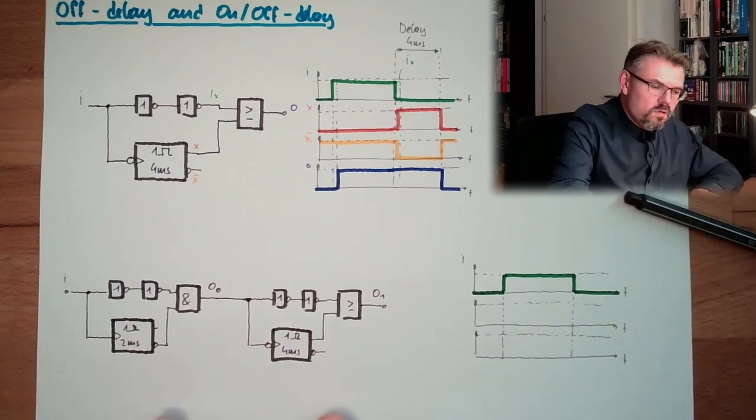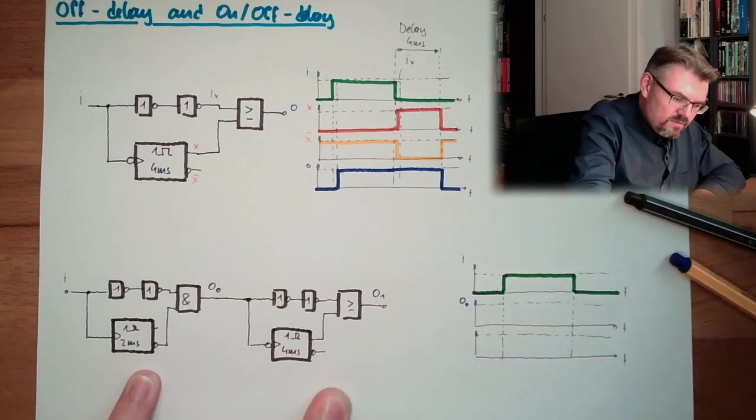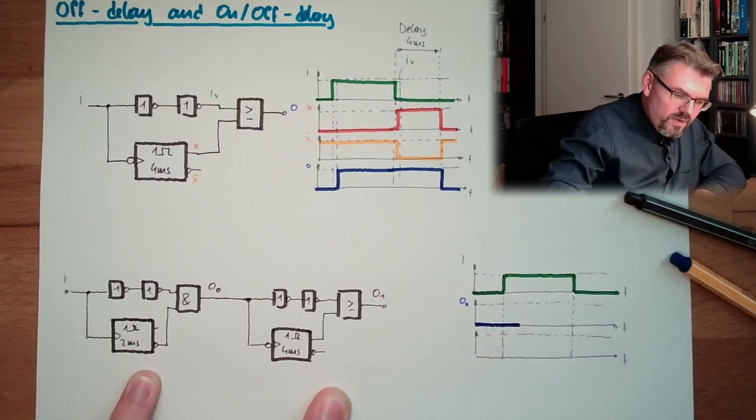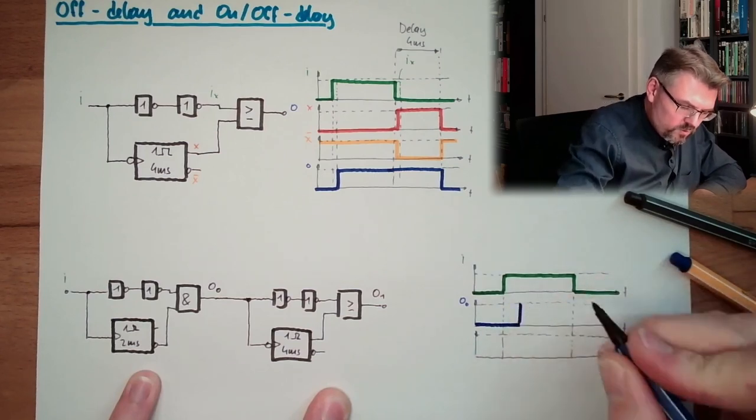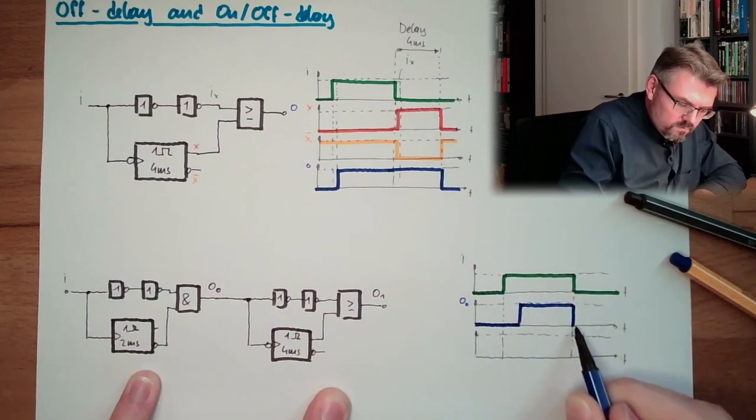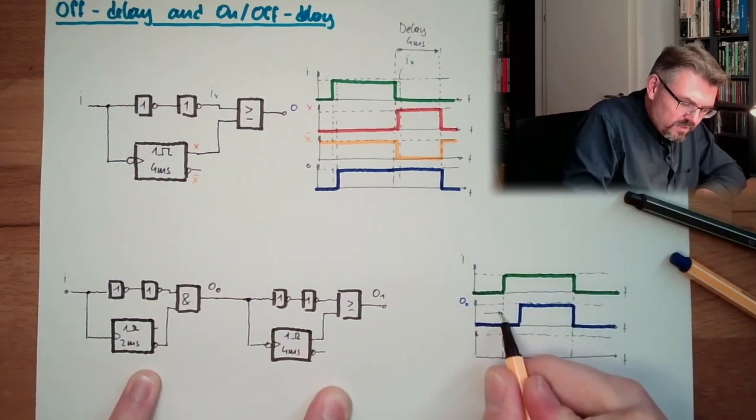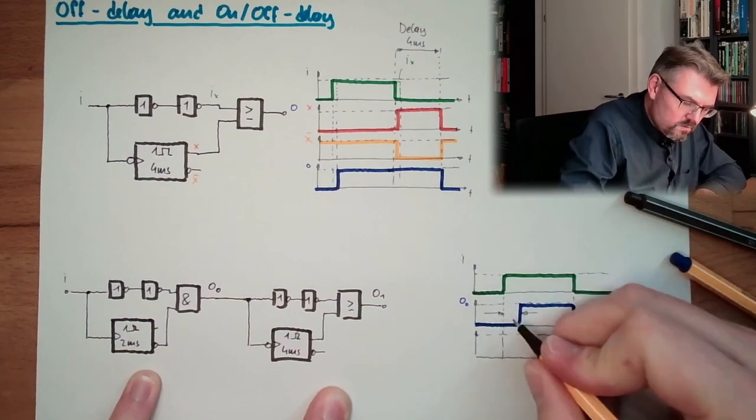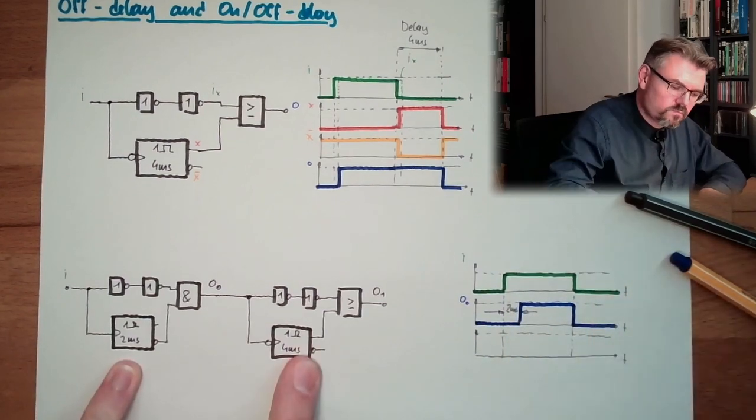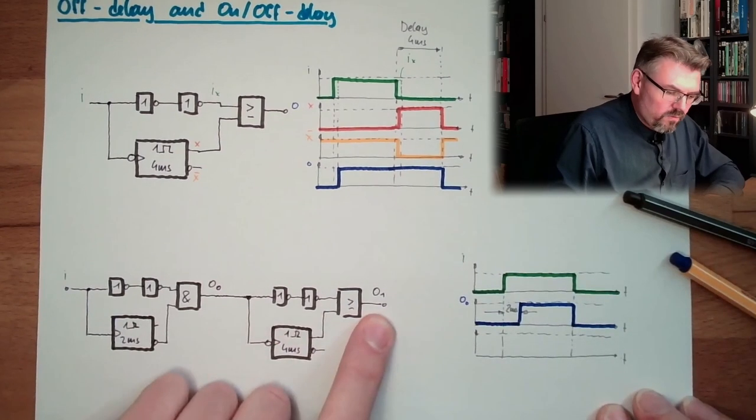Then, O0, so we have here O0, is looking like that. After 2 ms, we will switch to 1, and then turn OFF. So, we have here the 2 ms of this element, ON delay, and here, how does this look like?